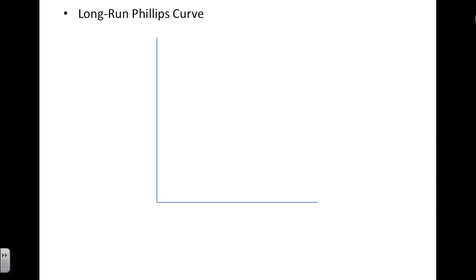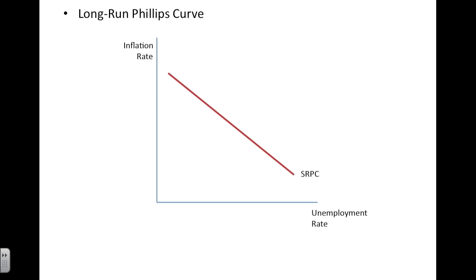Let's talk about the long-run Phillips curve. The Phillips curve is a way for us to understand the relationship between inflation, or the inflation rate, and the unemployment rate. On the long-run Phillips curve model, we have a downward-sloping short-run Phillips curve and an inelastic long-run Phillips curve.